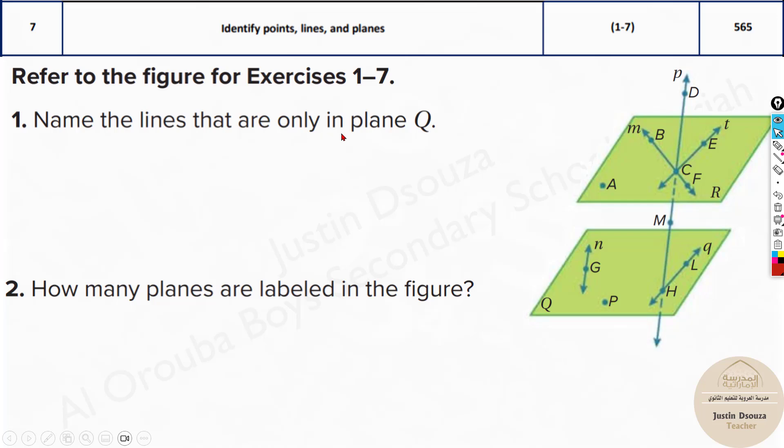Let us say name the lines that are only in plane Q. This is plane R and this is plane Q. Which are the lines over here? Line N and line Q, those are the ones.